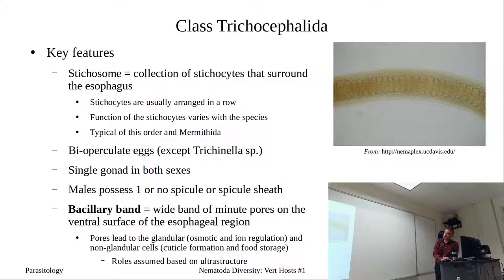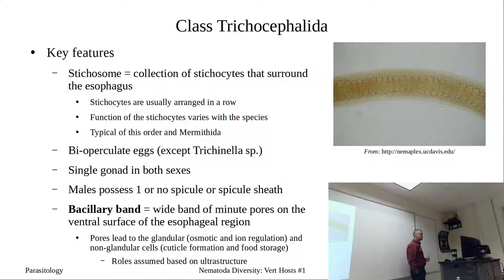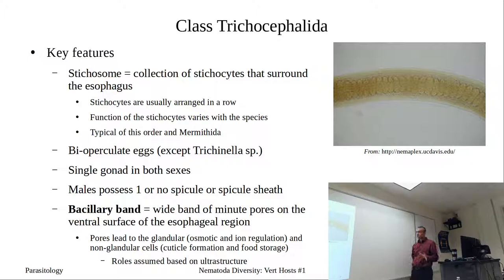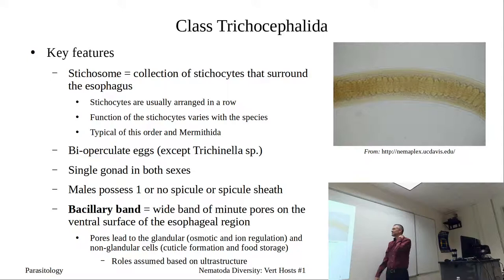We're going to start with the class Trichocephalida. Key features of this class are the presence of a stichosome — a collection of stichocytes that surround our esophagus. The stichocytes are usually arranged in a row, and their function varies depending on species. These stichocytes are typical of this order as well as the Mermithida. We're going to see these stichocytes in our whipworm. They look like pancake-like structures — a stack of pancakes.